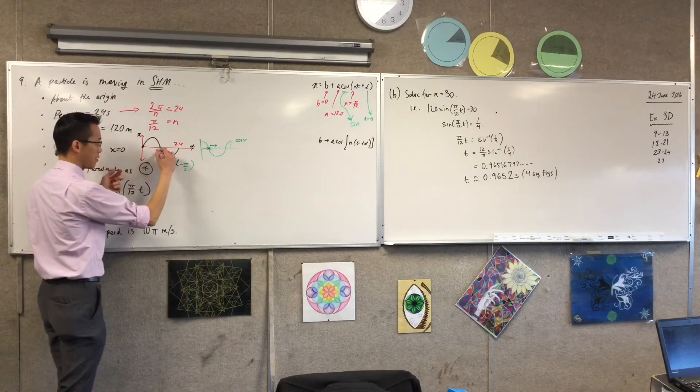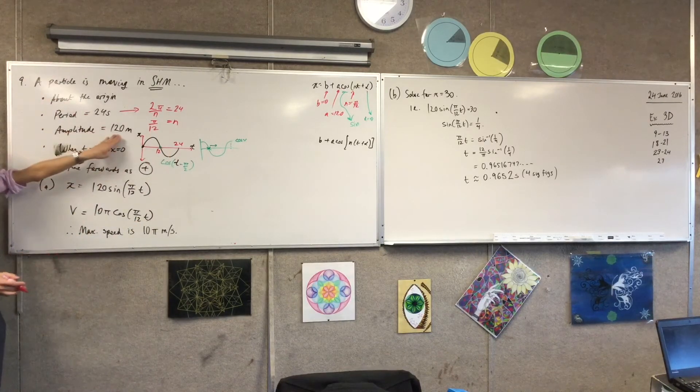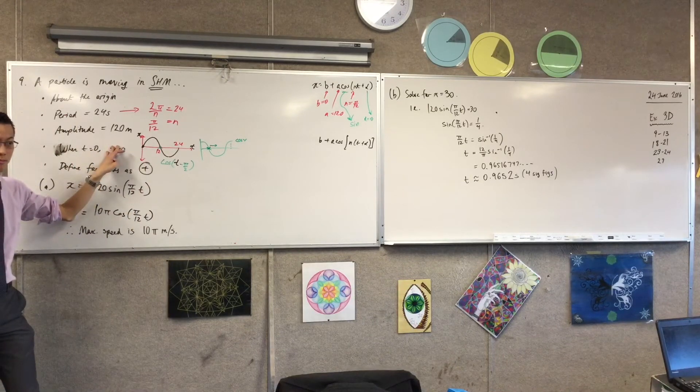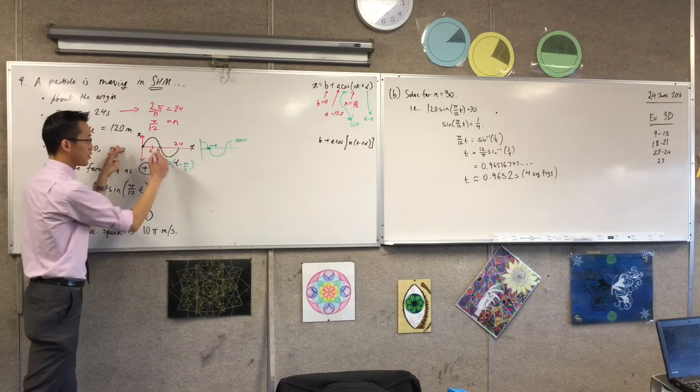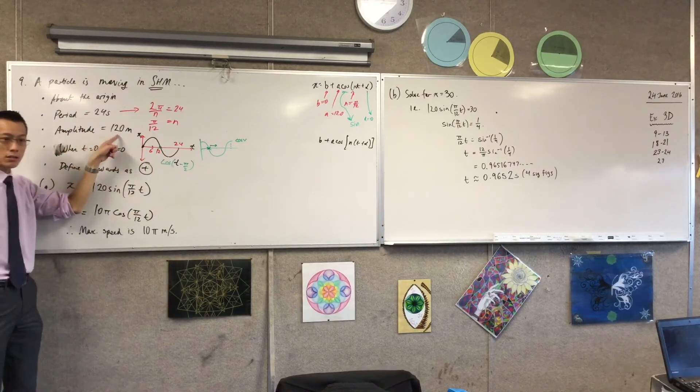It's just half of the period, right? Which means, to get to my extremity of motion, 120 meters away, how long does that take me? It's a quarter of the period, right? A half of 12. Okay, so it takes me 6 seconds to travel that far. 6 seconds.